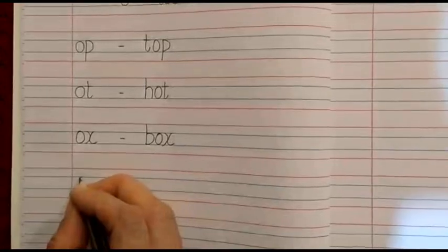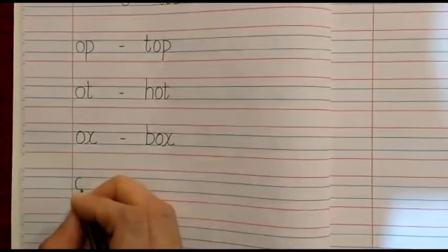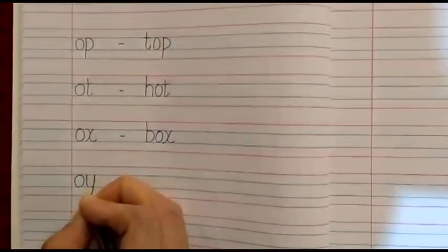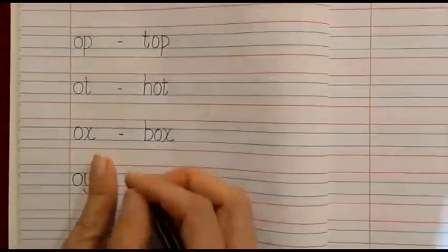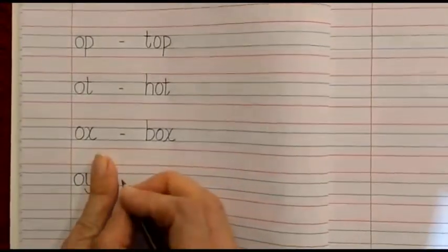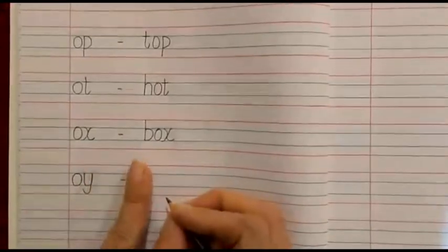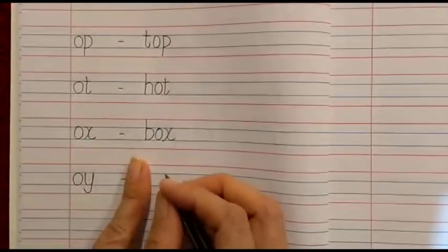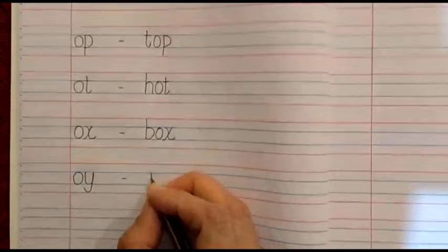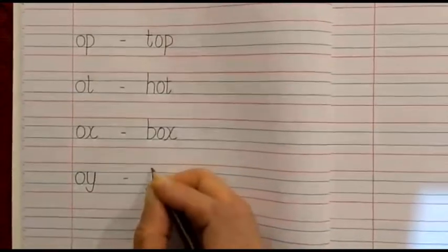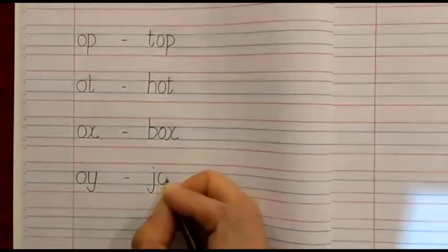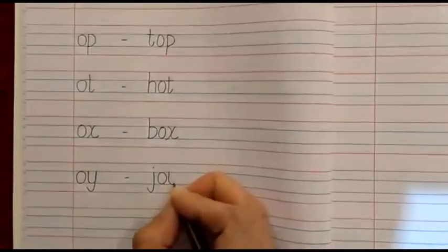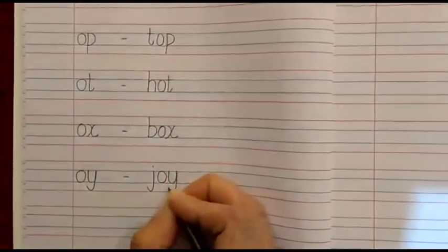Then we will write another O family word: OI. After writing OI, place your index finger, then a dash, then again your index finger, and we are going to write the word: J, OI — Joy.